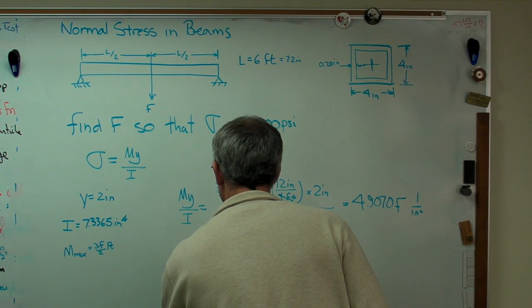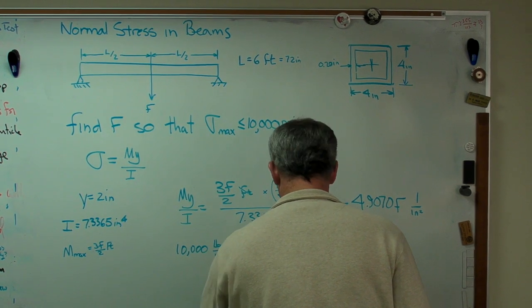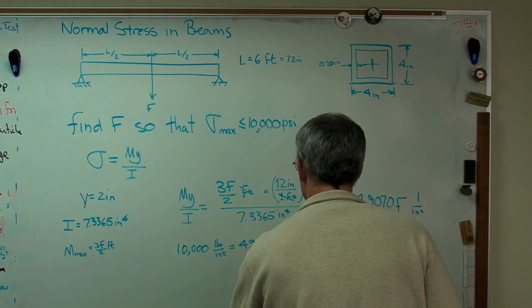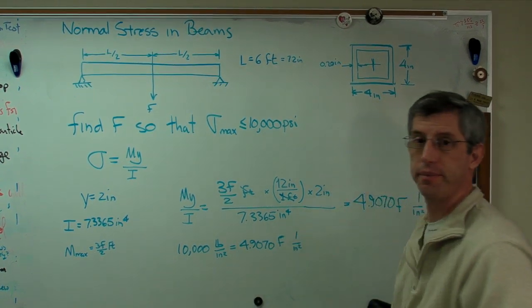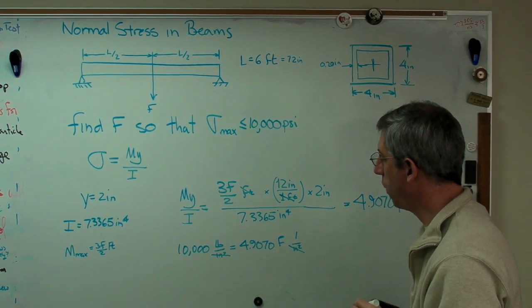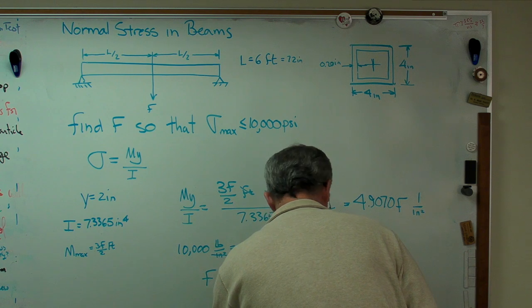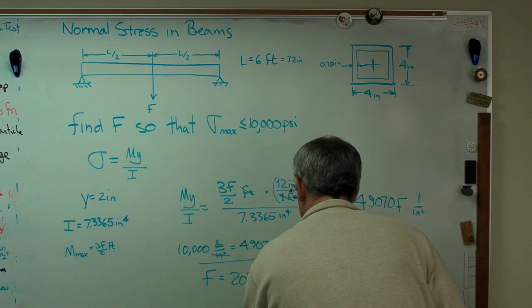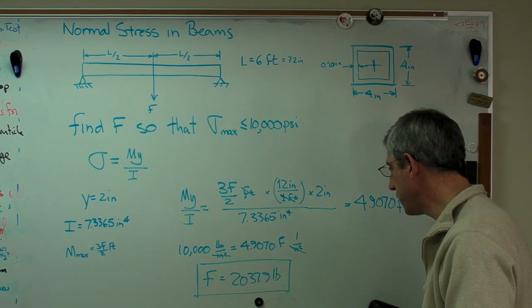So 10,000 pounds per inch squared equals 4.9070F times 1 over inches squared. All right? You can see where we're headed here. That and that cancel out. So F is going to wind up in pounds. And if we do this, carry out the calculation. There you have it. F equals 2,037.9 pounds.